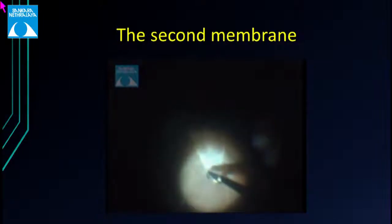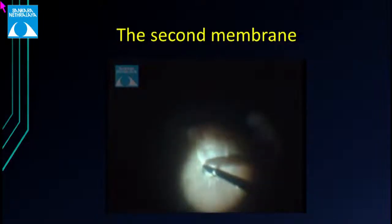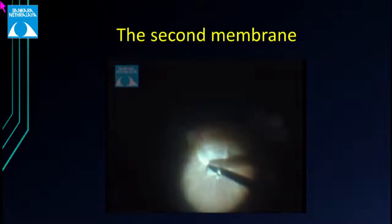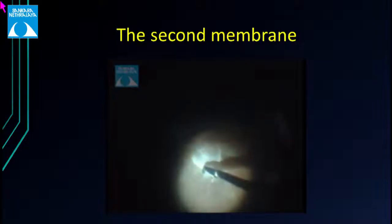This surgical video shows the presence of a second membrane. Proliferations are being peeled off with intraocular forceps. Beneath them, a shining area represents the second membrane. After trimming the proliferations, going beneath the second membrane and peeling it off allows complete relief of traction.